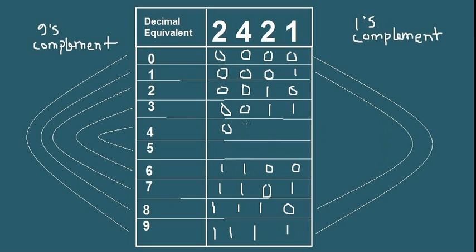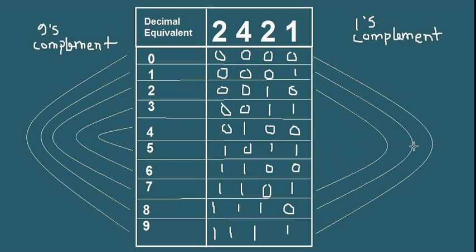For 4, the 2421 code is 0100, and for 5 it is 1011. Remember another thing: the codes should be in increasing order.